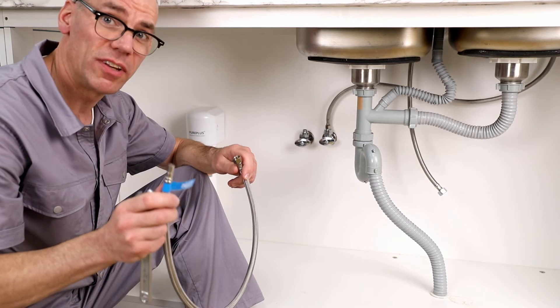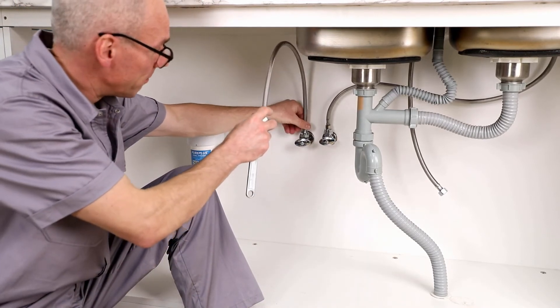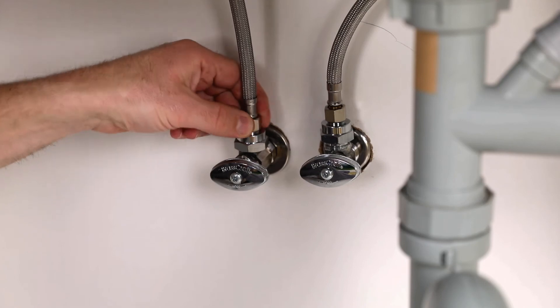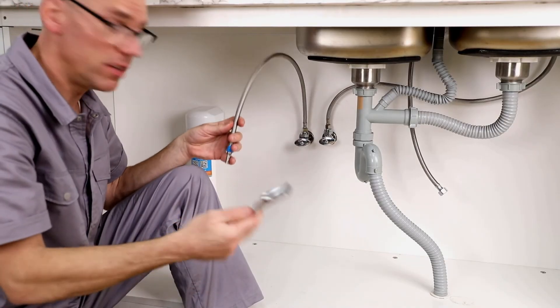Connect the filtration system's inlet hose with the 3/8 inch compression adapter and tighten it with the adjustable wrench.